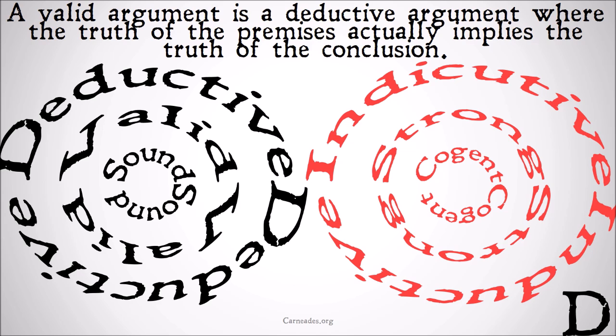A valid argument is a deductive argument where the truth of the premises actually implies the truth of the conclusion. What we mean by that is that there are no possible worlds in which the premises are true and the conclusion is false. It is logically necessary that if the premises are true, then the conclusion must also be true.